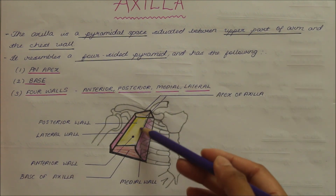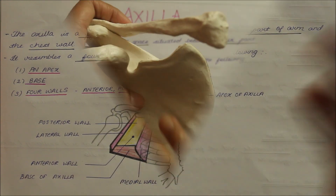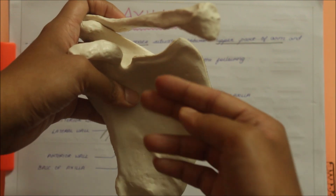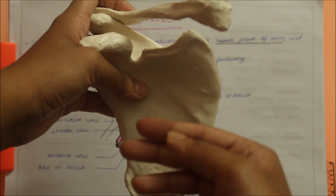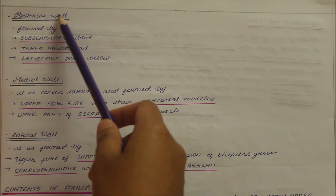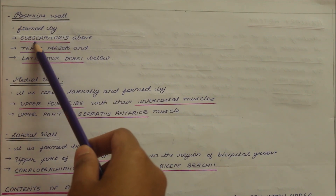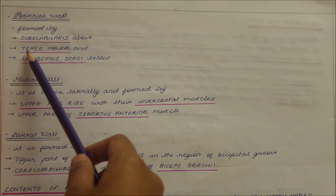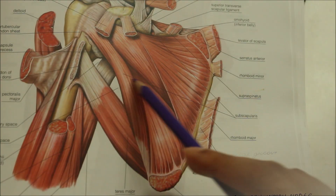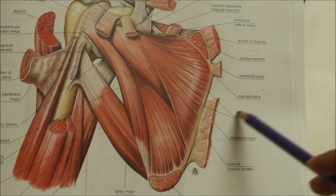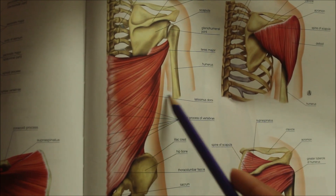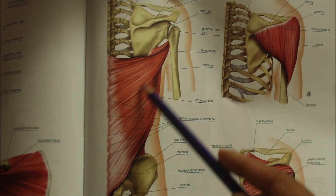The posterior wall, shown in yellow, is formed by the subscapularis above, and the teres major and latissimus dorsi below. This is the subscapularis muscle. This is a posterior view of the body showing the latissimus dorsi muscle.